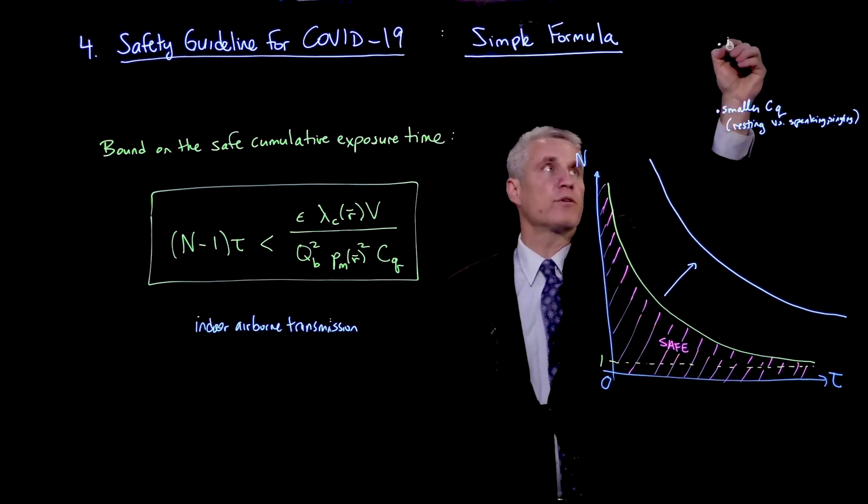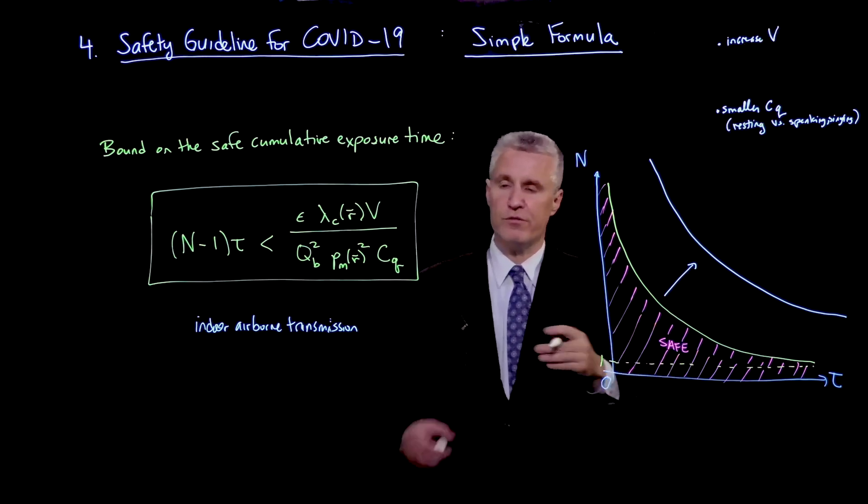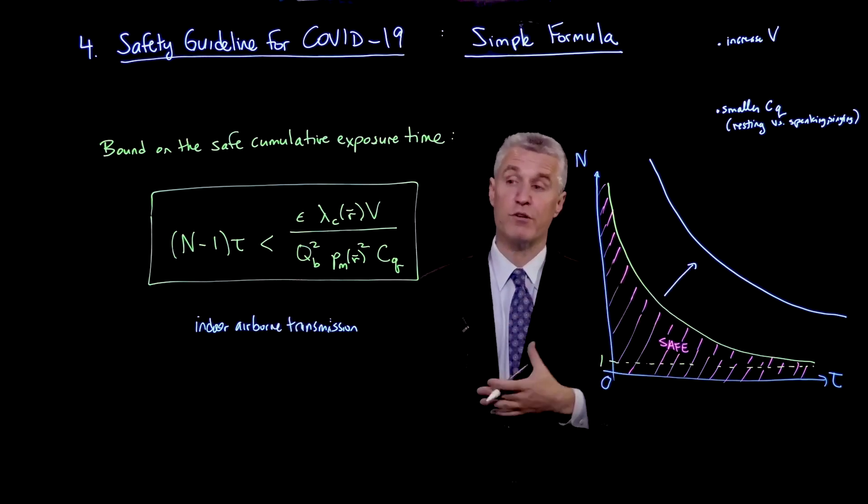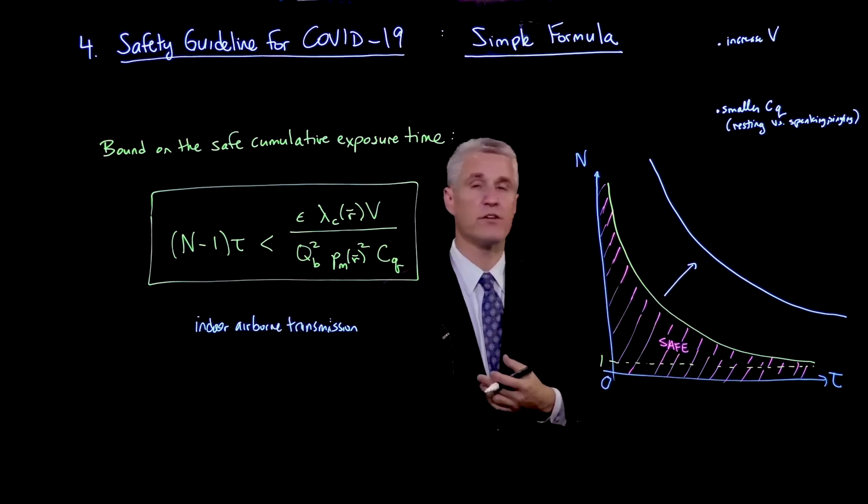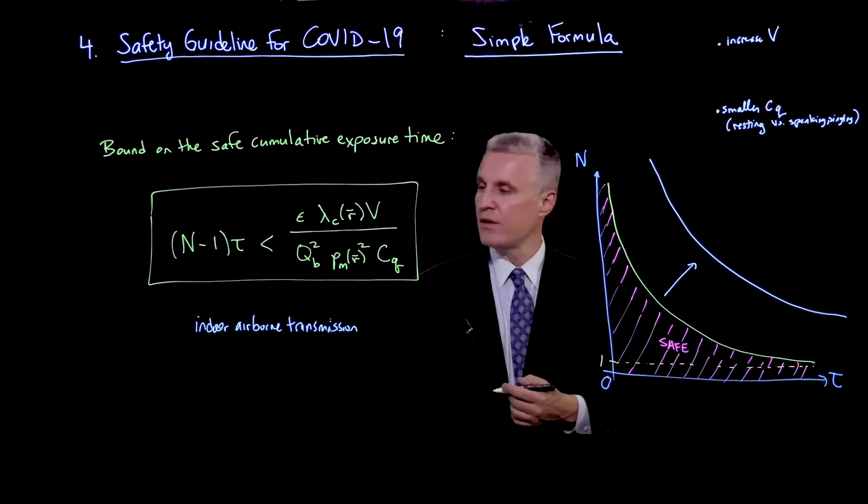Well, for physical parameters, we can increase V, the room volume. So if you take everything the same, same number of people, and you make the room much bigger, obviously the air gets more diluted, and hence there's less chance of transmission if people are scattered about the room.